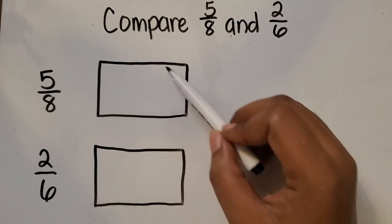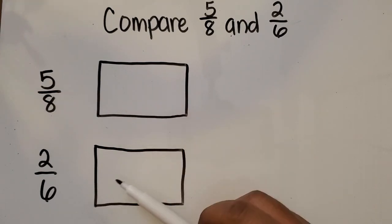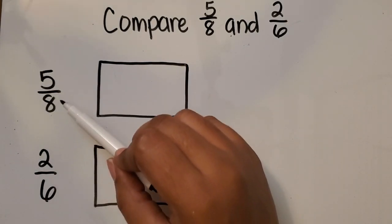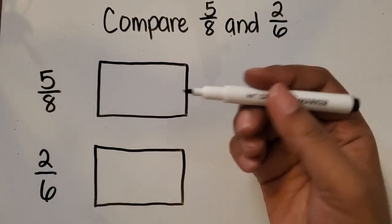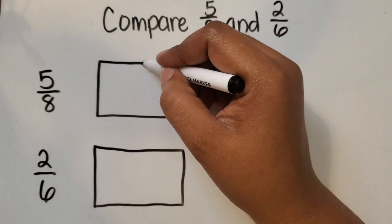When we partition our whole for 5 eighths, the sizes of each part is going to look different than our parts for 2 sixths because they have different denominators. So we're going to take the whole here and partition it into 8 equal parts.